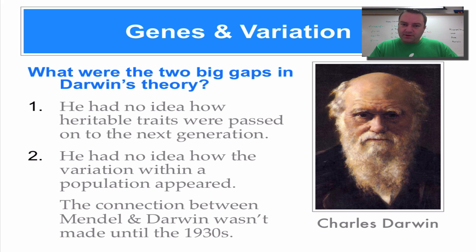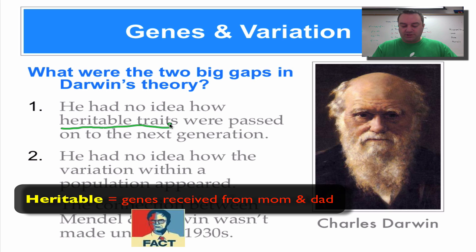is the one thing you want to understand is there were some things that Darwin couldn't explain. You've got to remember, this is the middle 1800s. We didn't have all of our knowledge of genetics that we have today. So Darwin basically had no idea how these heritable traits got passed on to the next generation. He didn't know about genes. He didn't know about alleles. He didn't know any of that stuff. That was Gregor Mendel's world.